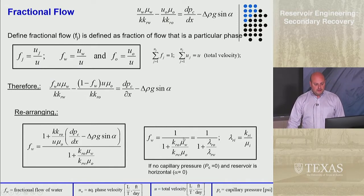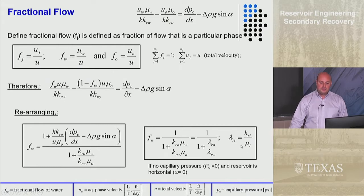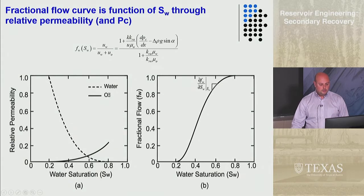This can be simplified. If capillary pressure is negligible and there's no gravitational effect, you get a simpler form. Sometimes we write these as mobilities, where the mobility lambda of phase j is the relative permeability of that phase divided by the viscosity of that phase. Here again is a relative permeability curve — this is the oil relative permeability and this is the water relative permeability. Over here is a plot of fractional flow versus water saturation.